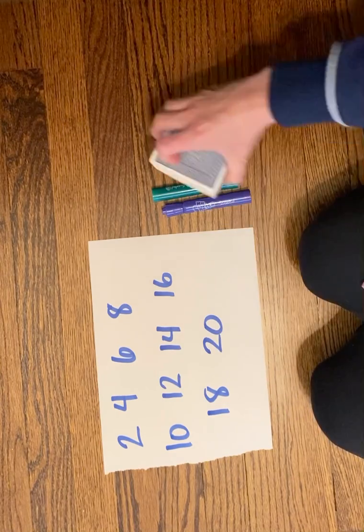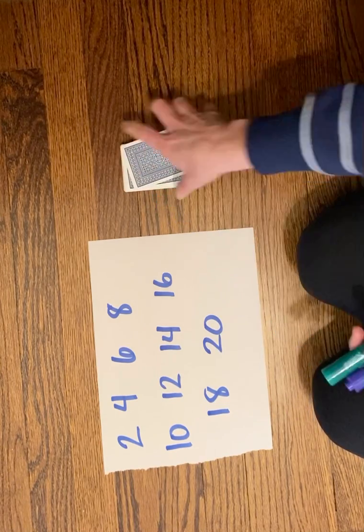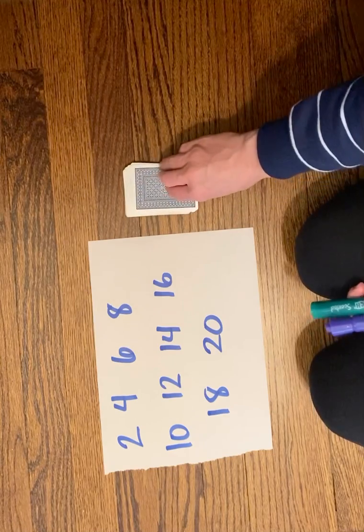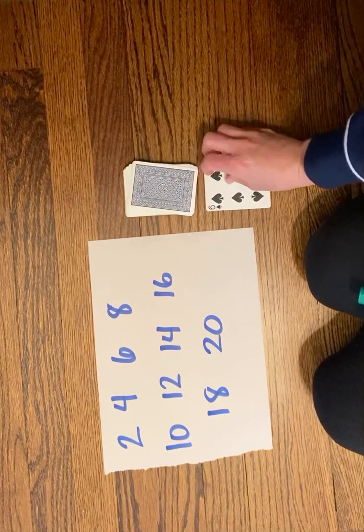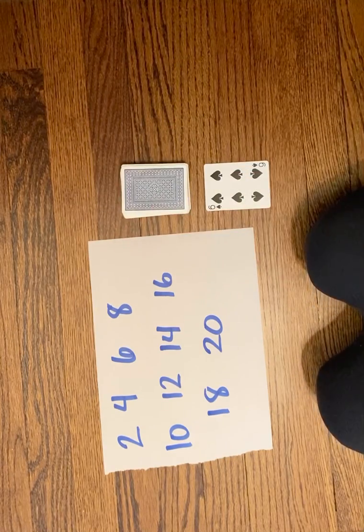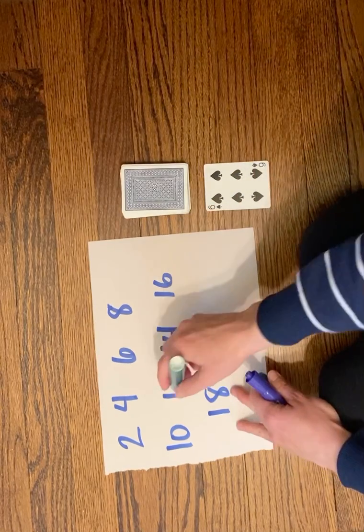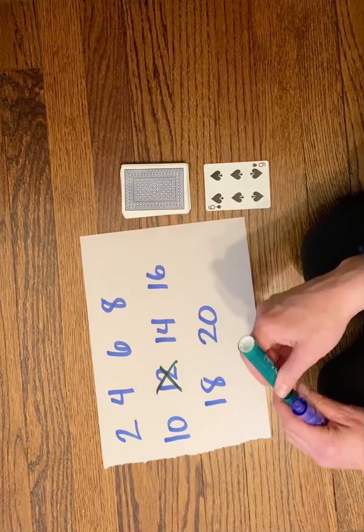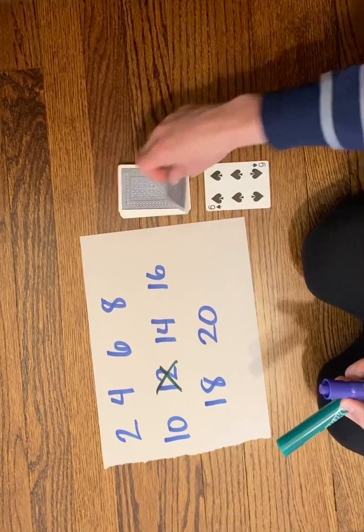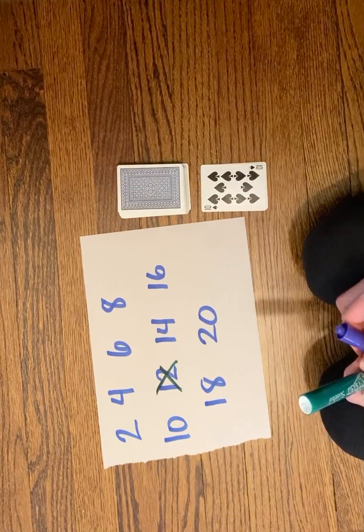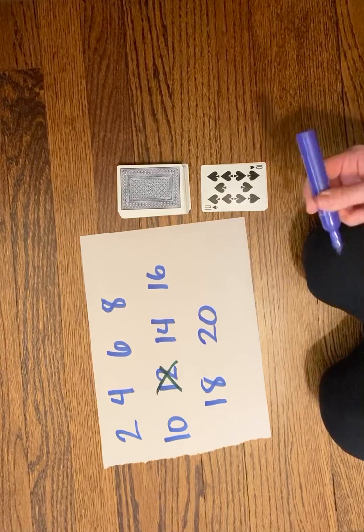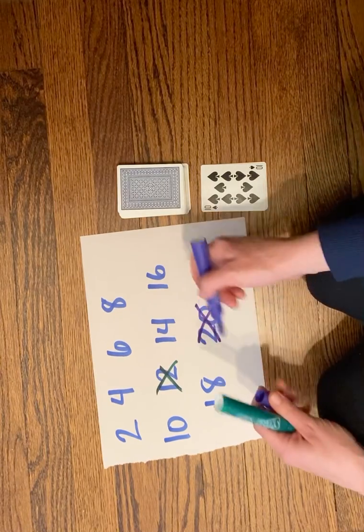You'll take turns flipping cards, either by yourself or with your partner. Six times two is twelve, so green was going first for me, so green gets to take the twelve. Now it's purple's turn. Ten times two is twenty, so purple gets to cross off twenty.